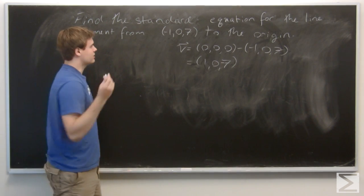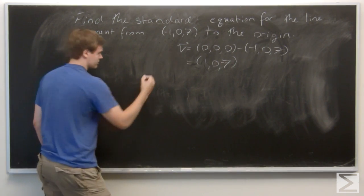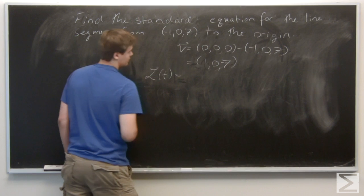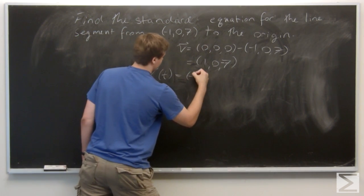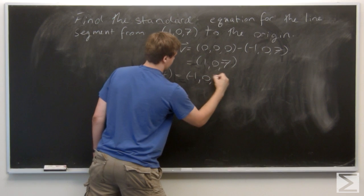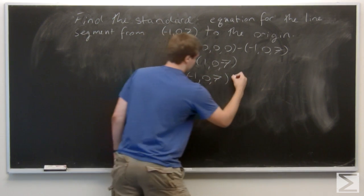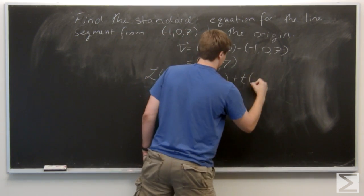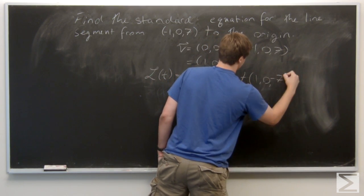Okay, perfect. So now the equation of the line segment is just going to be L(t) = (-1, 0, 7) + t(1, 0, -7).